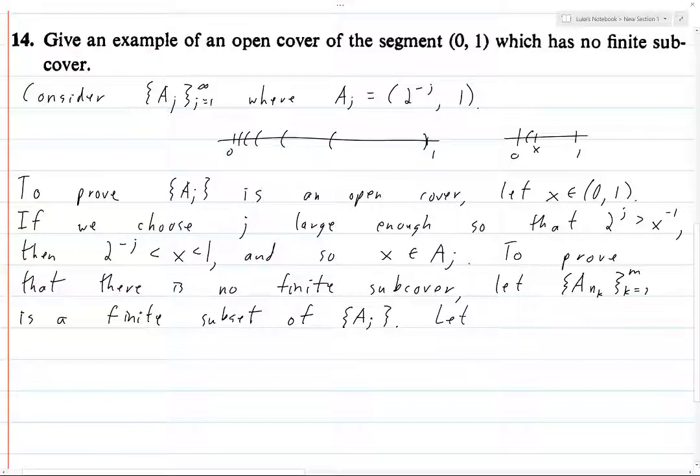So now we've got n1 through nm. We've got finitely many of these indices and these are all positive integers. And because there's finitely many, there must be a largest one. So let n be the maximum n k, where k is taken between 1 and m.